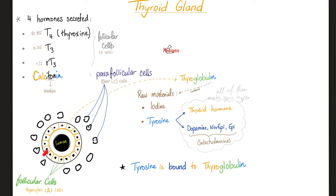What's the function of those thyroid follicles? They make thyroid hormone — that's why we call them A cells, the most important cells. How about the parafollicular cells? They are clear. They make calcitonin, and we call them the C cells.